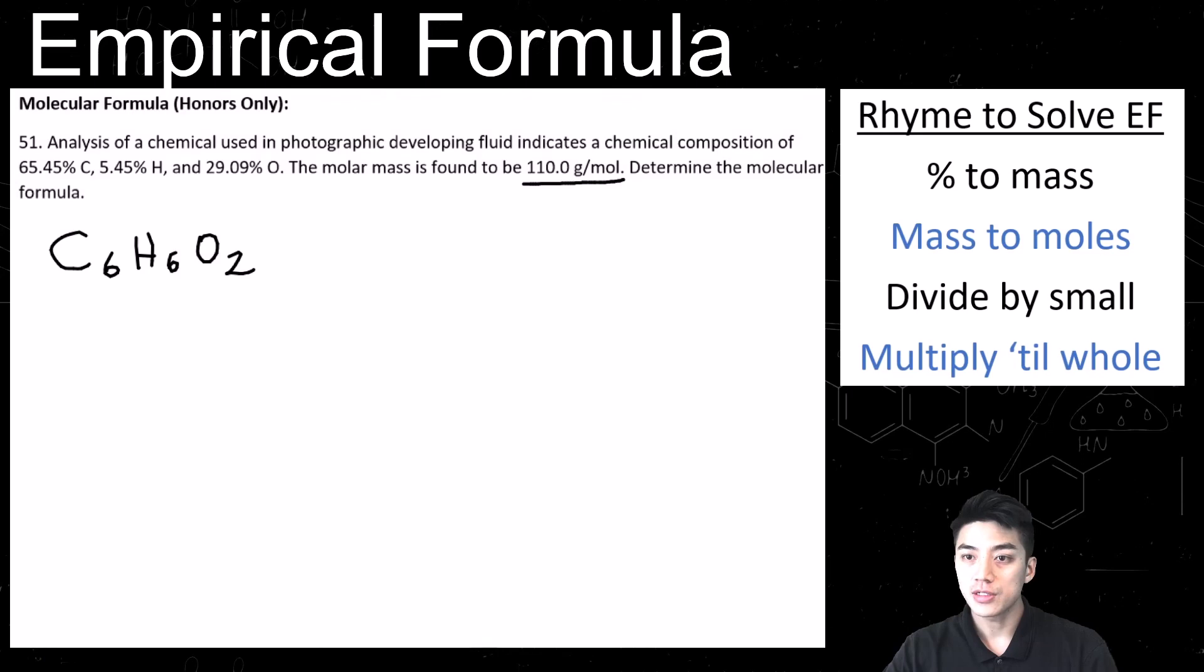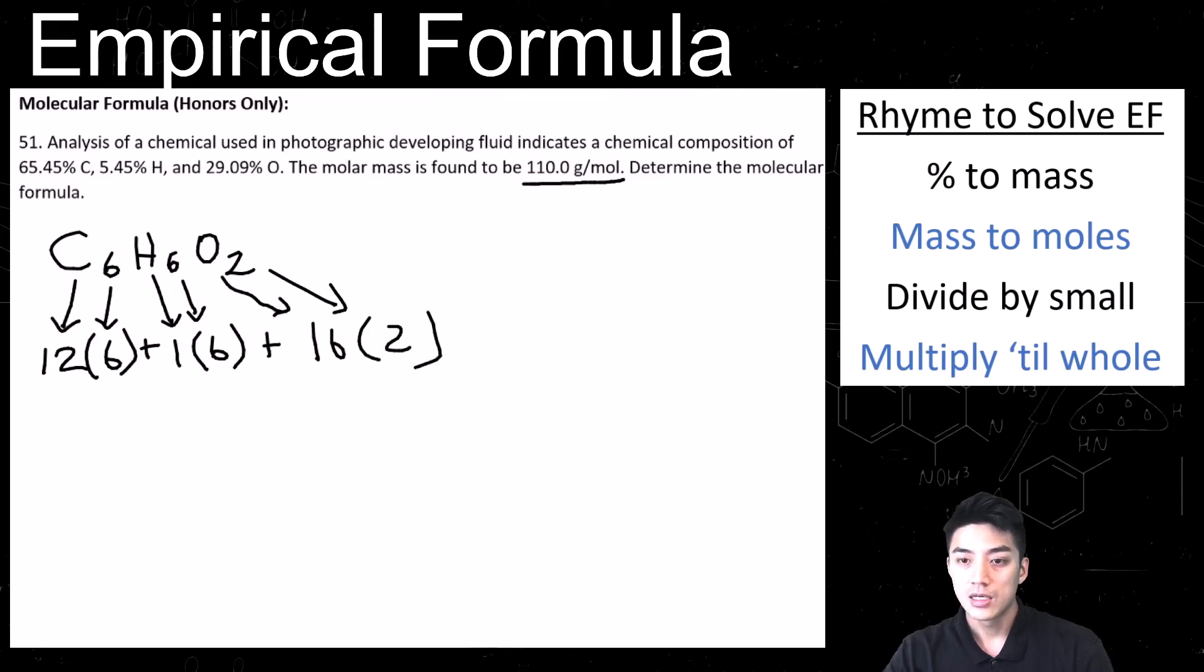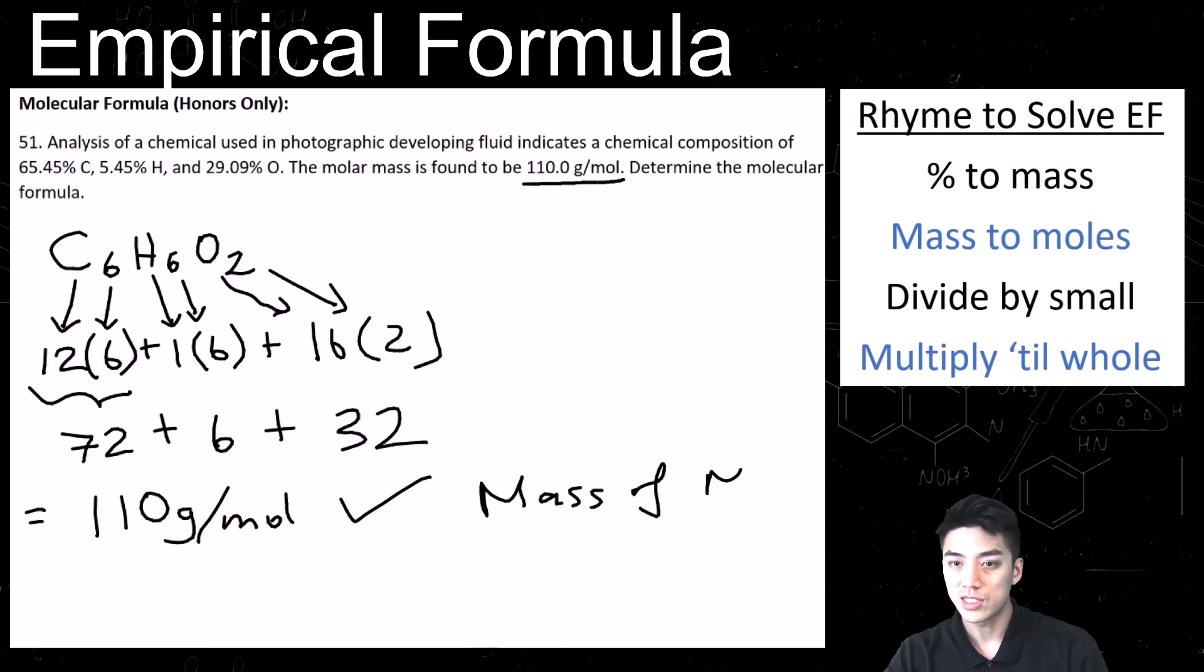And of course, you can always check your answers and confirm that your molecular formula is correct. So you were told that the mass of this thing is 110 grams per mole. So 6 carbons, each weighing 12, 6 hydrogens, each weighing 1, and 2 oxygens, each weighing 16. So when you add this all up, 12 times 6 is 72, plus 6, plus 32, you are going to get 110 grams per mole. So that confirms that you're doing this problem correctly. So you found out what the molecular formula is, which is C6H6O2. And when you found its molar mass, it was 110, which was provided to you in the problem.